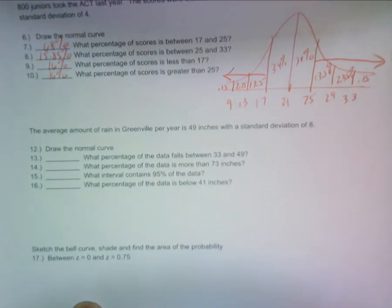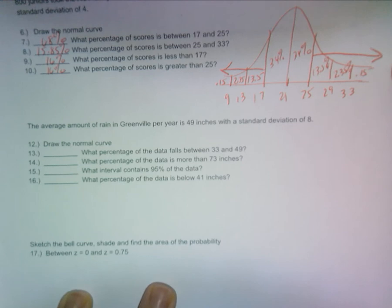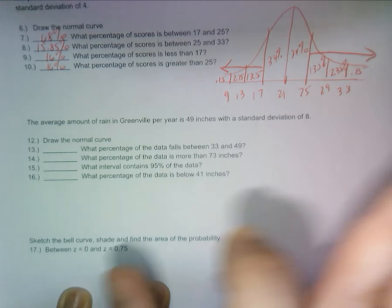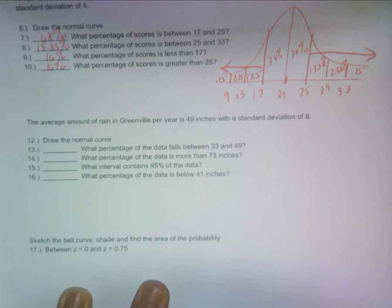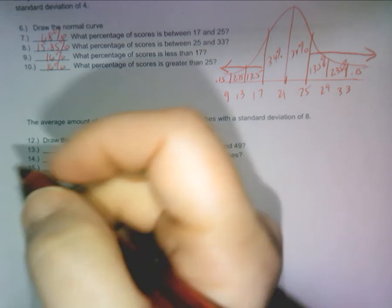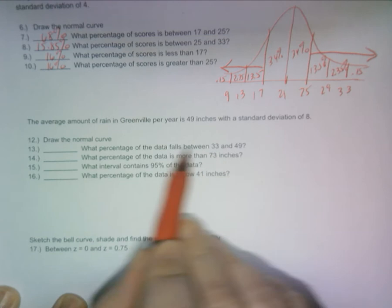The average amount of rain in Greenville is 49 inches with a standard deviation of 8. Okay, I'm not going to do this one, but it's the same concept, believe you me, it's literally the same. Would you agree?